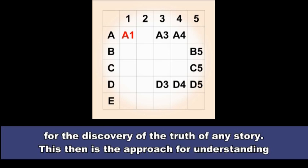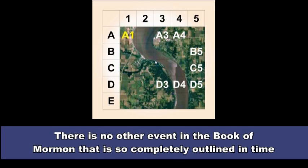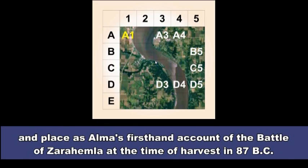The positions and movements of people within a grid of space and on a timeline are important for the discovery of the truth of any story. This then is the approach for understanding the geography that is the setting for the Battle of Zarahemla as described in Alma Chapter 2. There is no other event in the Book of Mormon that is so completely outlined in time and place as Alma's first-hand account of the Battle of Zarahemla at the time of harvest in 87 BC.